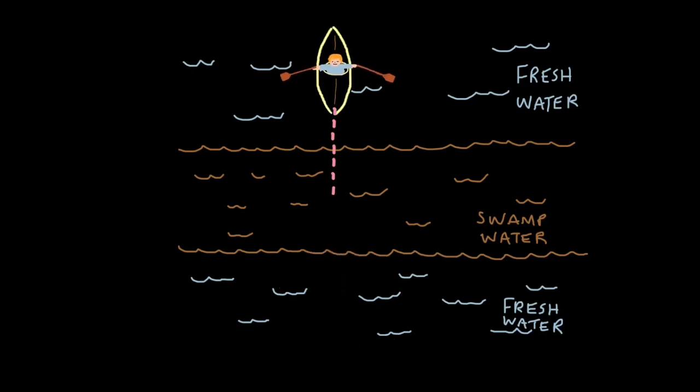So in less dense fresh water, it's faster. In more dense thick water, it's slower. Then fresh water, it's faster again. So that explains why it slows down, but it doesn't explain why light bends.